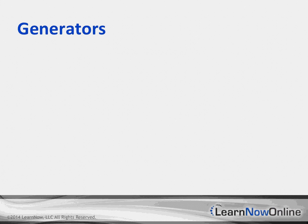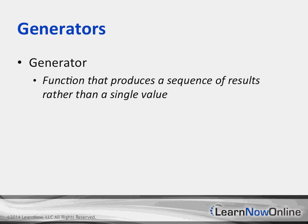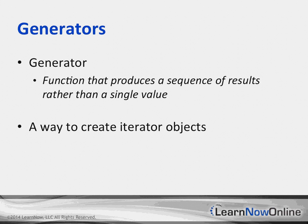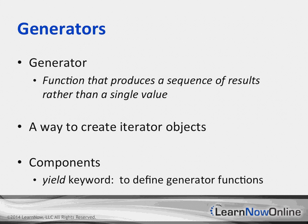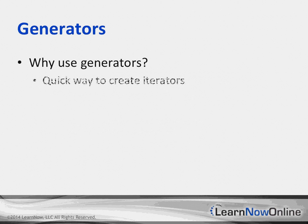Generators are a great tool for your Python arsenal. They're a way to create iterator-type functionality in a more elegant way. Essentially, a generator is a function that produces a sequence of results rather than a single value. It's a way to create iterator objects, and the main key to remember when using generators is the yield keyword. This is similar to how Ruby uses yield throughout the entire language — in Python, yield is used to define a generator function.